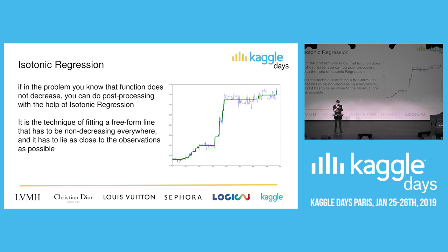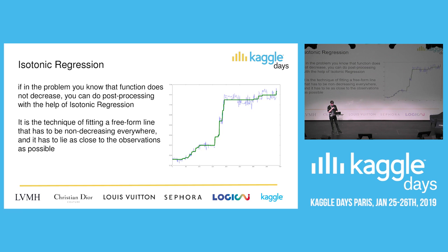Next, I want to talk about isotonic regression. If in the problem you know that a function does not decrease, you can do post-processing with the help of isotonic regression. First you build your usual tree-based model predictions, and after that you apply isotonic regression as post-processing. It can help when we have some time series with events, where we know the function does not decrease. It helped me once.